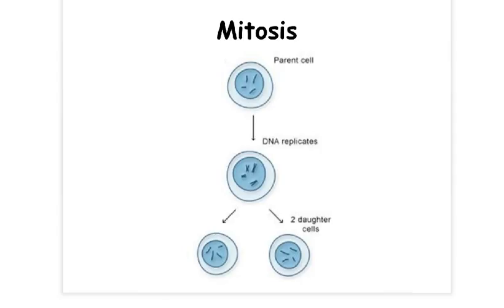So the process of mitosis results in two daughter cells that are exact copies of each other and the parent cell they originated from. But how do we get from one cell to two?